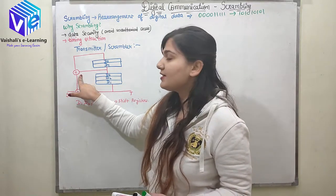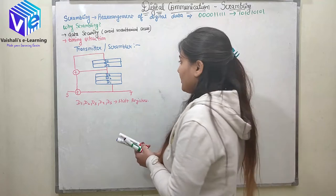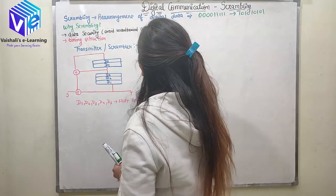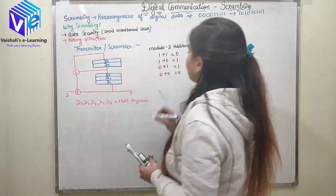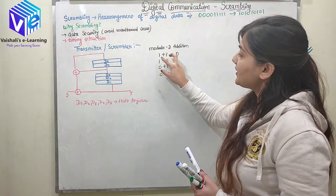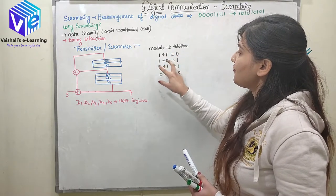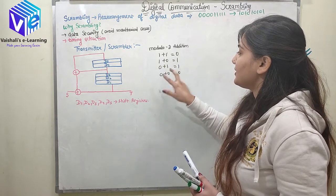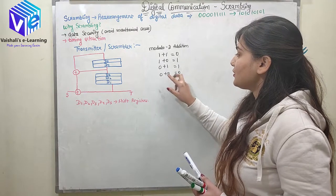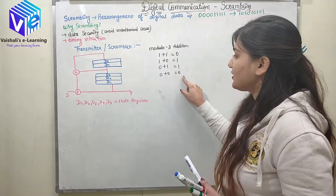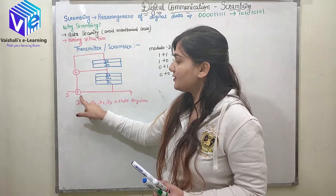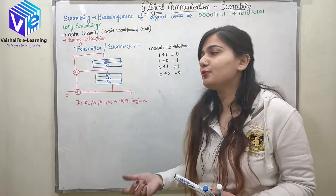This plus symbol represents modulo-2 addition. The logic is: if I add two similar bits, it gives 0; if I add two different bits, it gives 1. So 1 plus 0 gives 1, and 0 plus 0 gives 0. This is how modulo-2 addition works, and both plus symbols in the circuit represent modulo-2 addition.